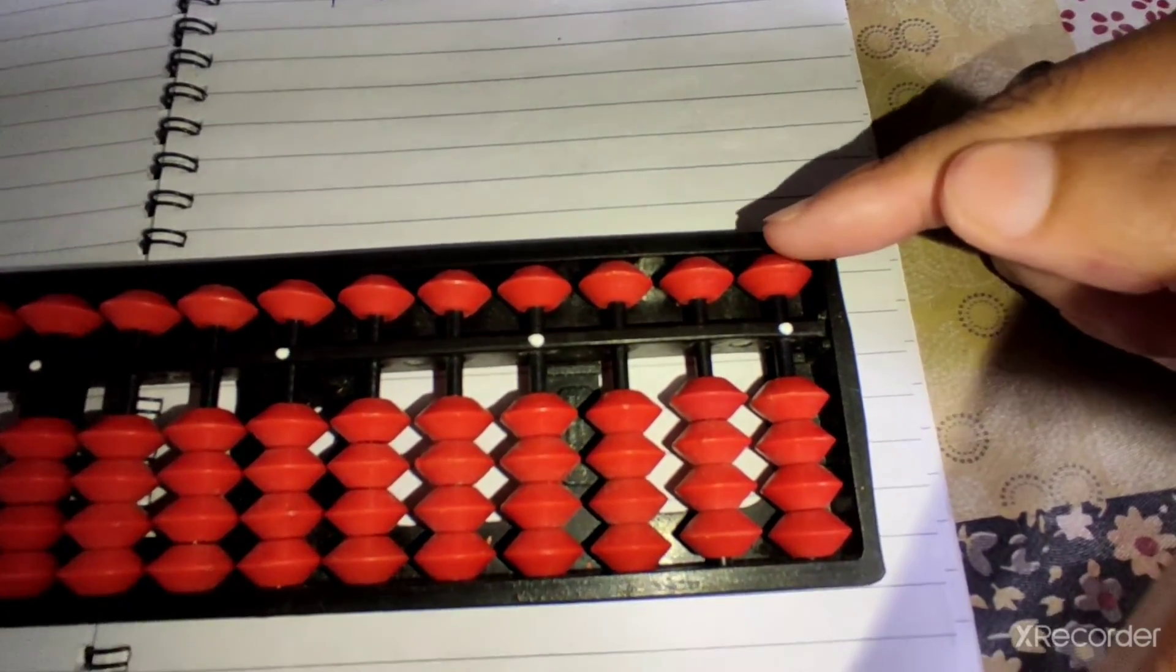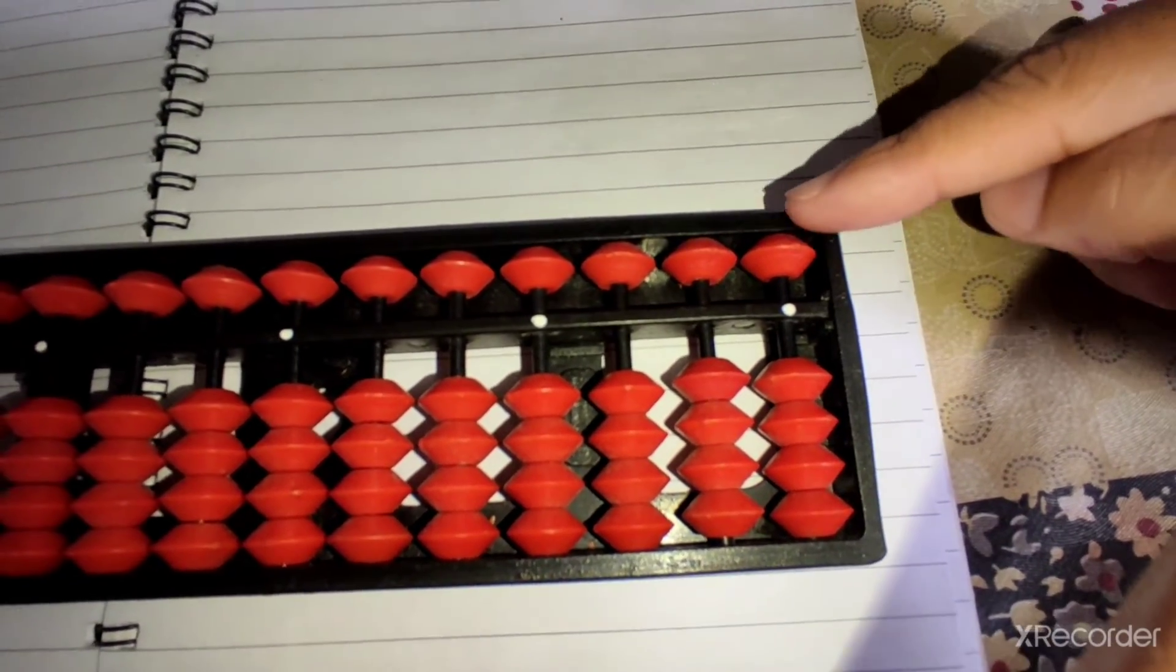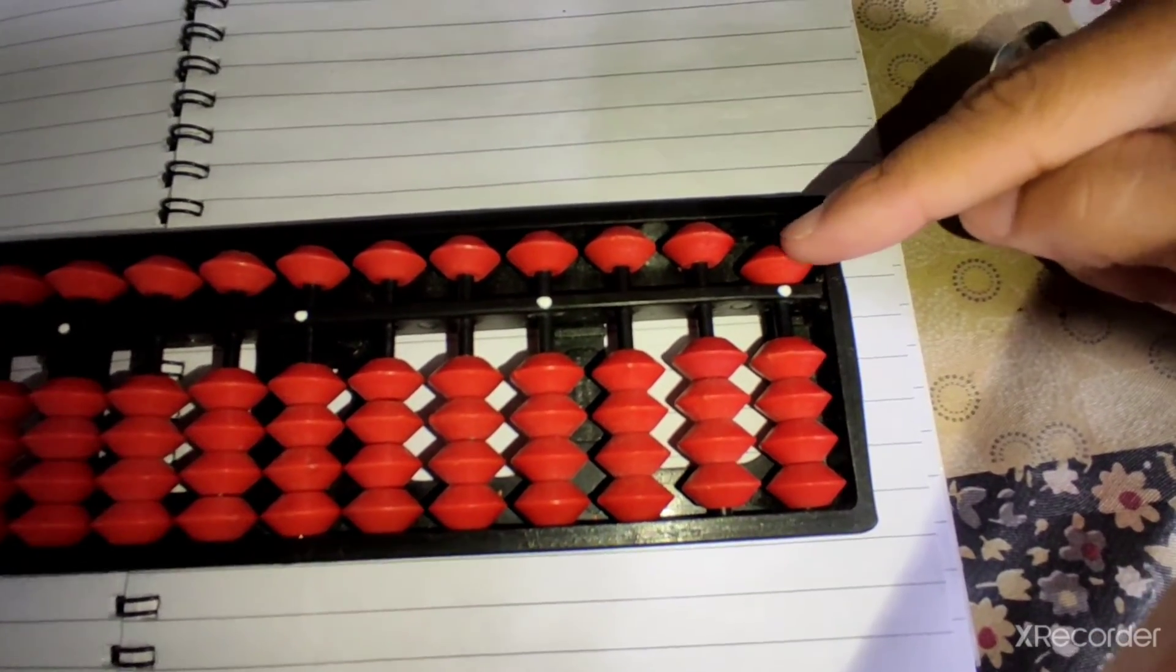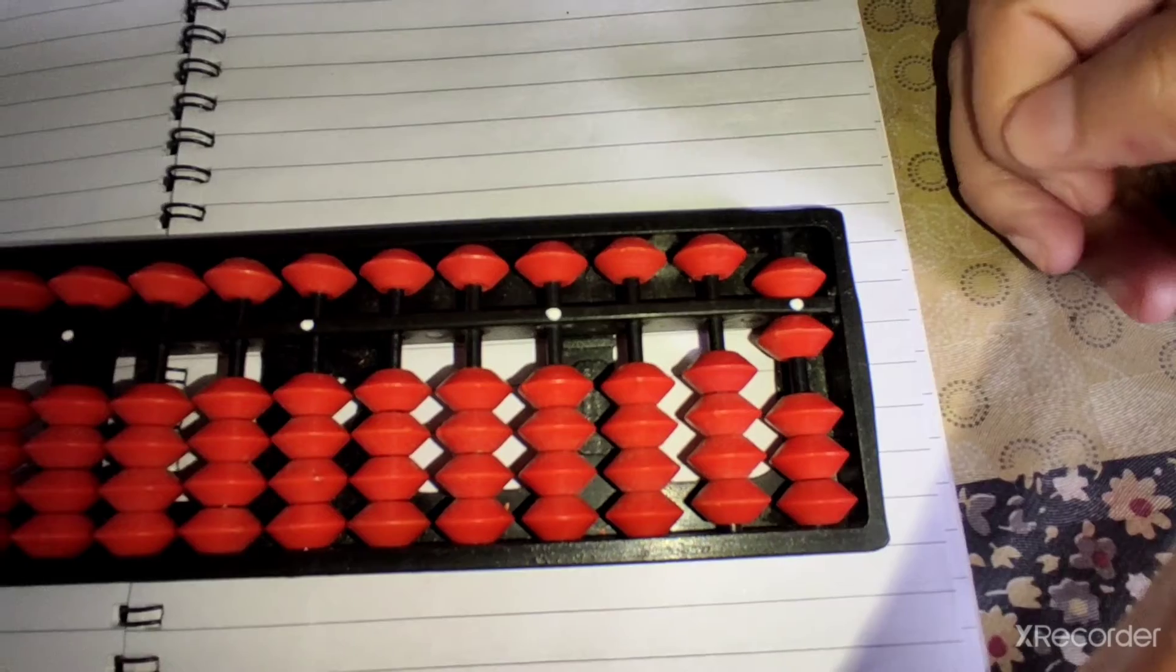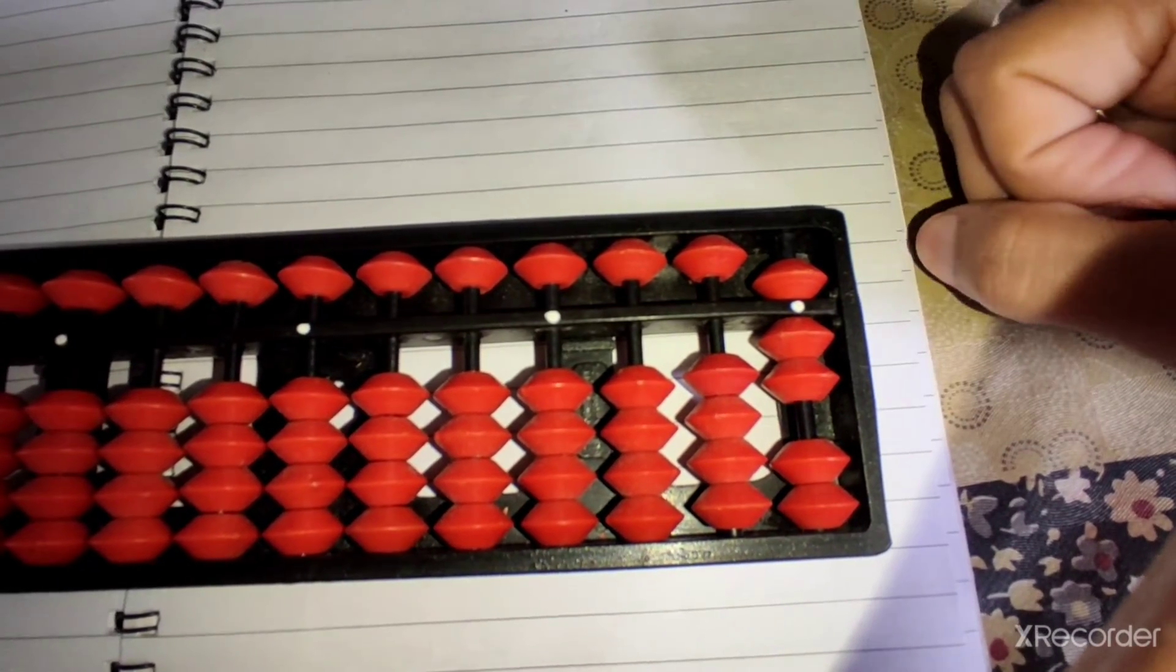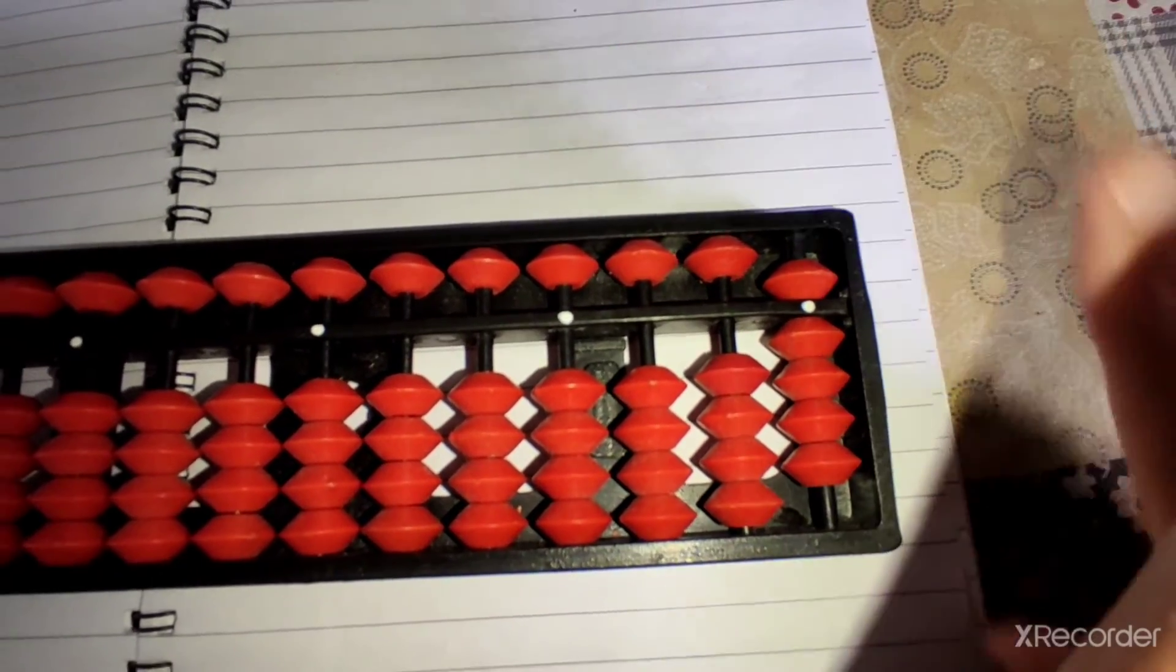Now, 5. 5 is in our upper side. So, use only index finger while you are addition and subtraction of upper beads. 5. And 5 plus 1, 6. Then, 5 plus 2, 7. 5 plus 3, 8. 5 plus 4, 9.